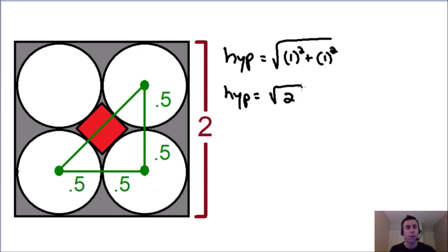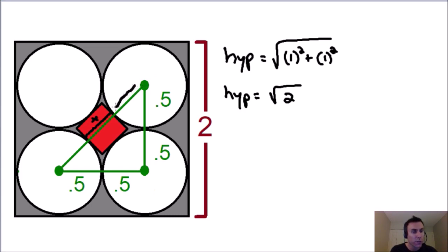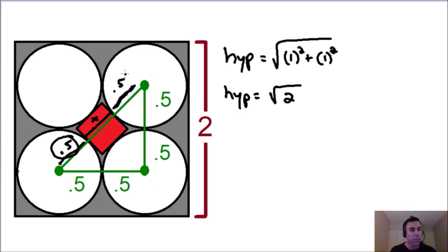Now we know the length of the hypotenuse, but we need to find out the length of the side of this red square — we'll call this length X. The length from the center of this circle to the edge of the circle is the radius, equal to 0.5, and the same for the other circle. If we add all of these lengths together, the hypotenuse is equal to 0.5 plus 0.5 plus X, which equals 1 plus X.